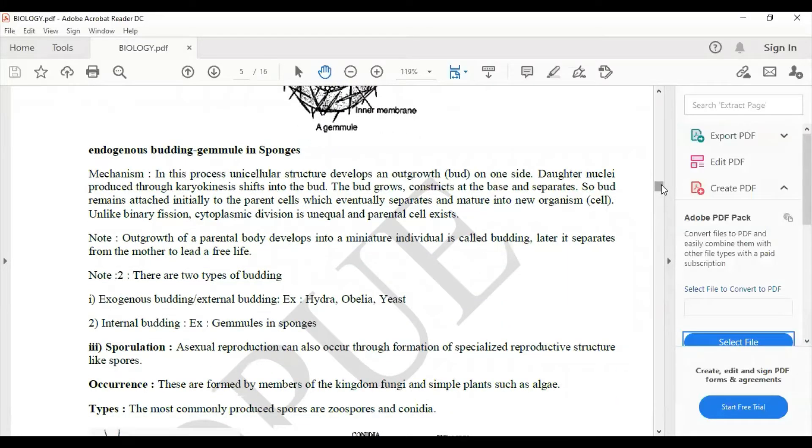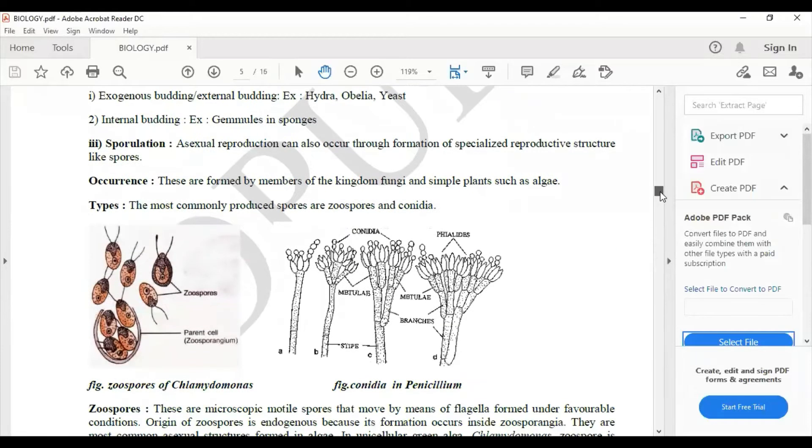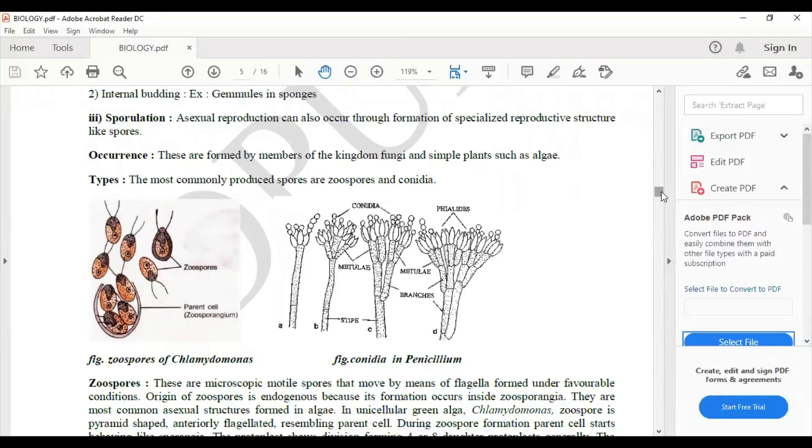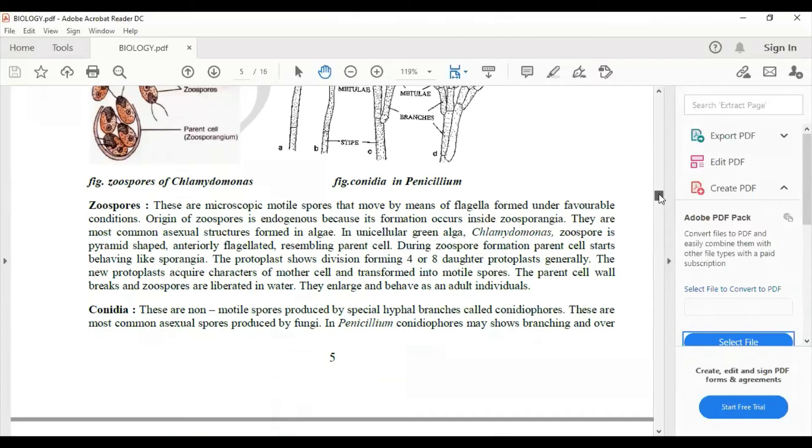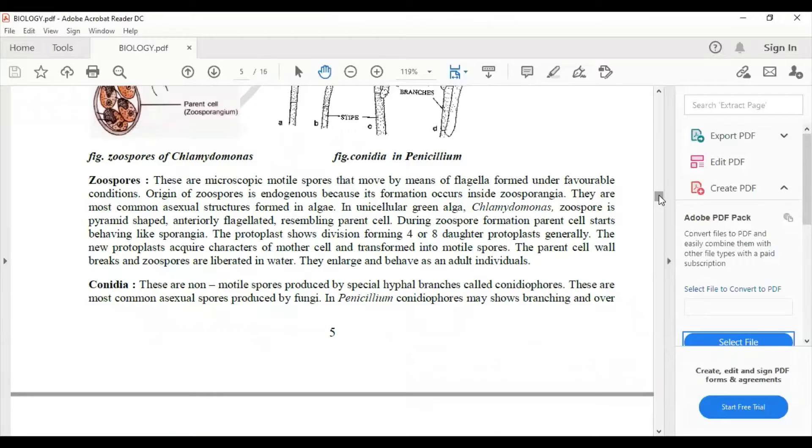You can see the definition for sporulation. Sporulation is yet another type of asexual reproduction which is again important for your examination. Next is zoospores, conidia.